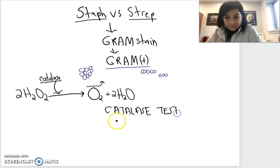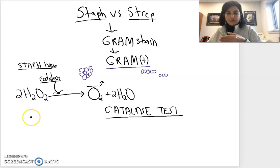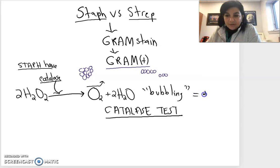With the catalase test we know that staph has the catalase enzyme while strep does not. So if we have a mystery organism and we're trying to figure out if it's staph or strep, the first thing we do is a catalase test. We place a little smear of cells on the surface of a glass slide with a couple drops of hydrogen peroxide. If we see bubbling, that's the oxygen gas forming in the liquid water, so bubbling means it's a positive reaction.